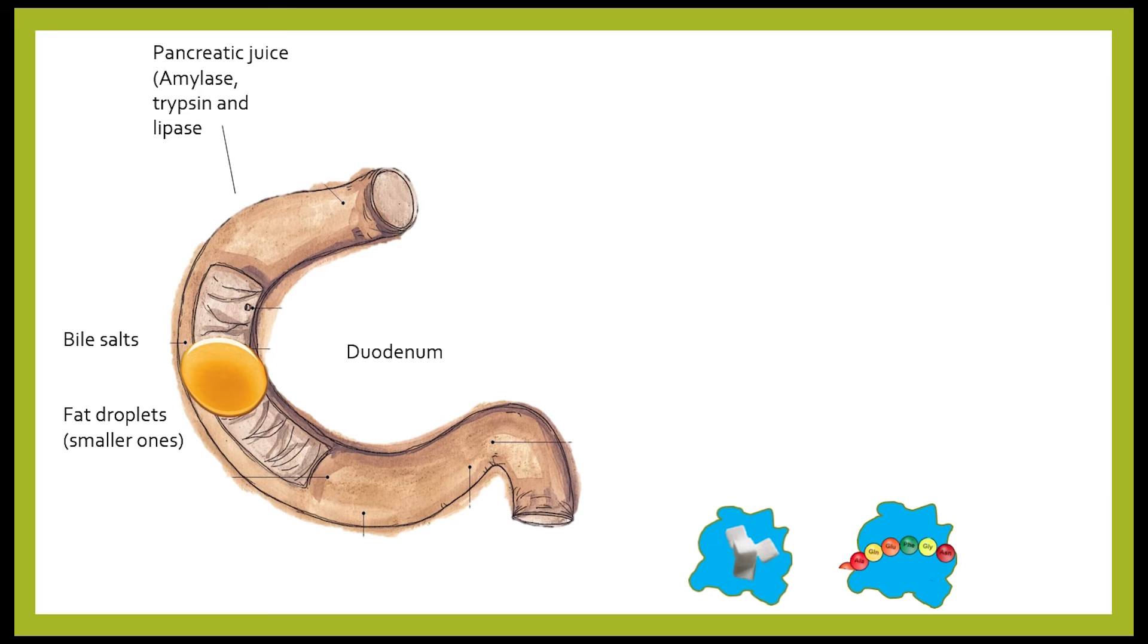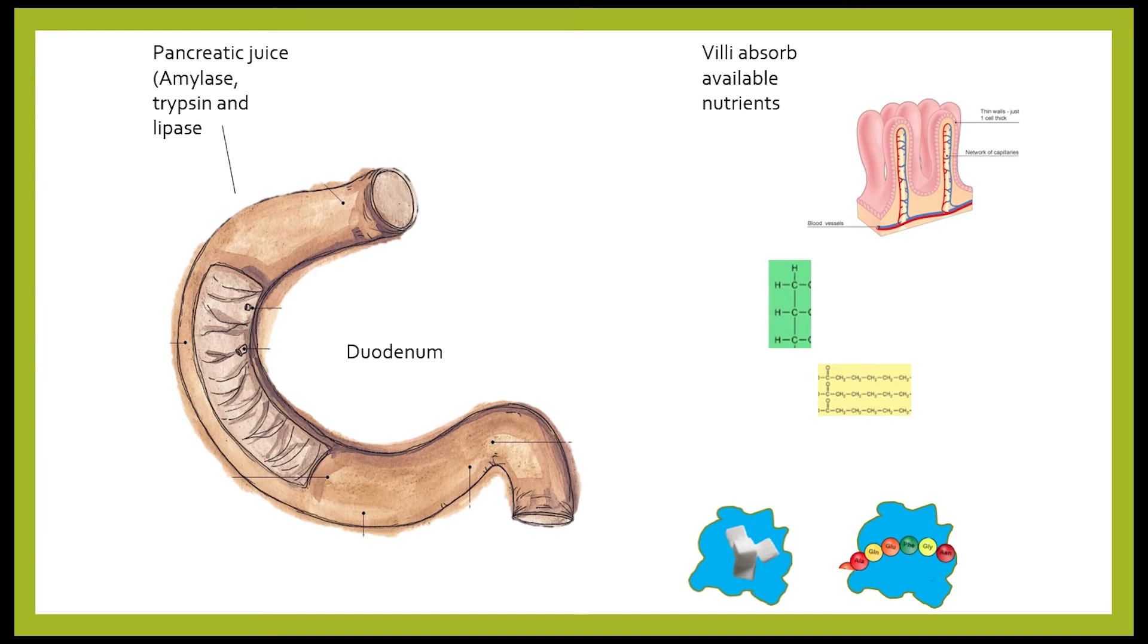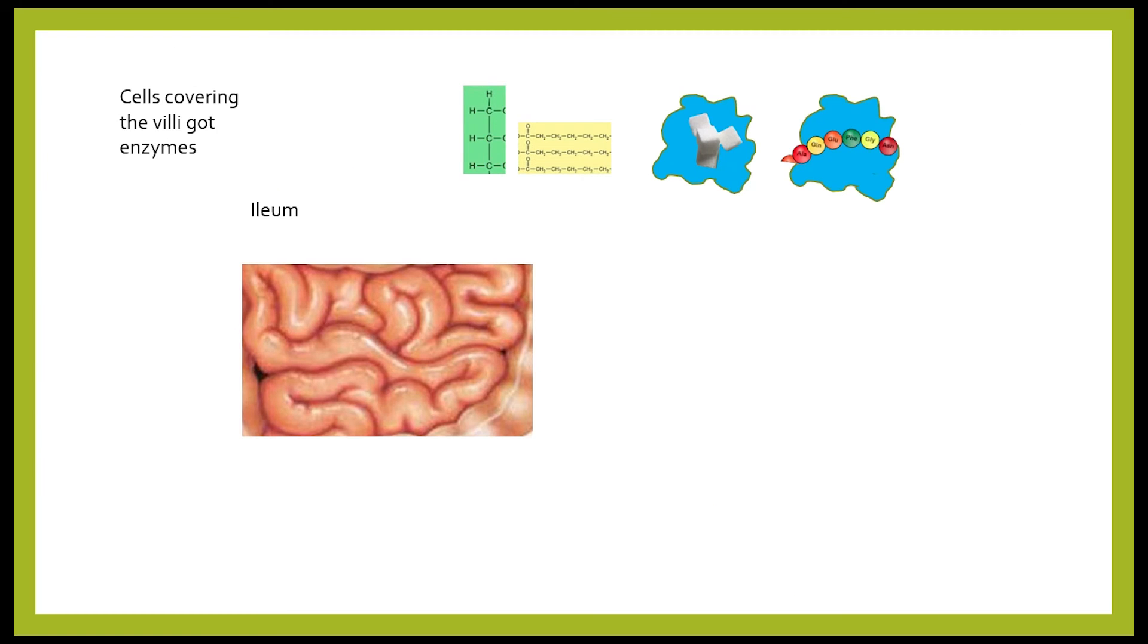After this, the lipase breaks down the fat droplets into fatty acids and glycerol, which can be absorbed by the lacteals in the villi of the duodenum. Villi are one millimeter long projections in the lining of the intestine, which contain lacteals and blood vessels.